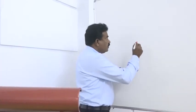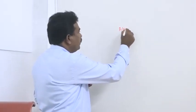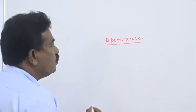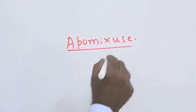In conclusion part of sexual reproduction in organisms, we have to discuss three important terms. One is apomixis, second one is polyembryony, and third term is artificial pollination or artificial hybridization.